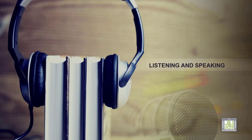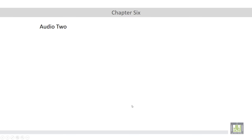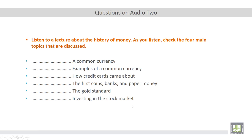As-salamu alaykum wa rahmatullah. Welcome to the second listening practice of chapter 6. This part talks about the history of money and how we use money to exchange goods. What are the items that we used to exchange goods between us? You are required to listen to a lecture about the history of money. As you listen, check the four main topics that are discussed.